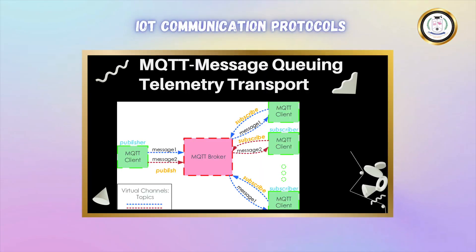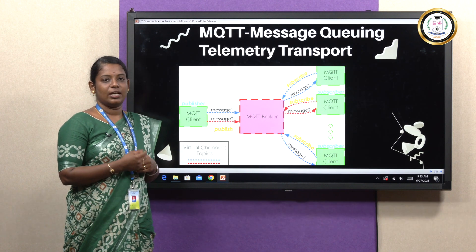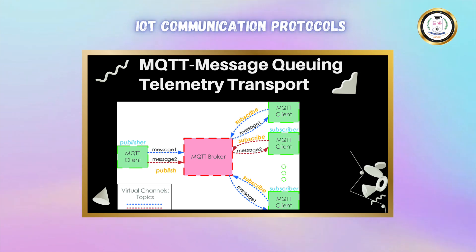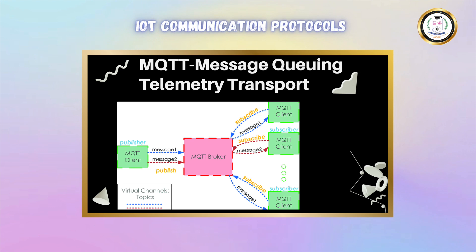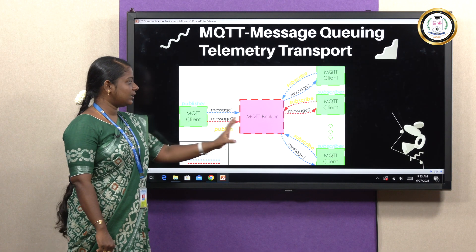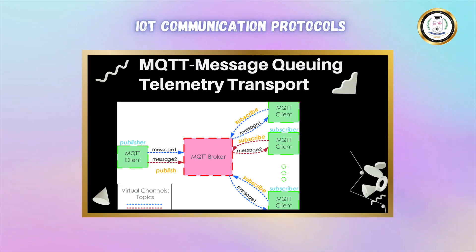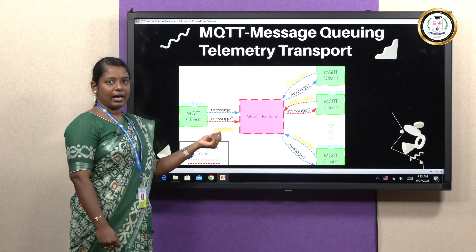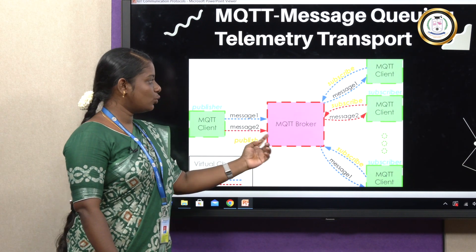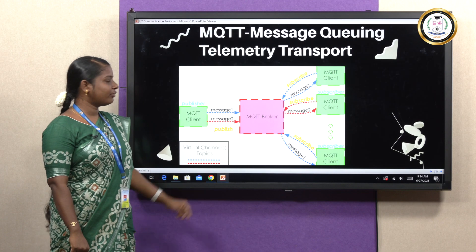Next is MQTT protocol, which is Message Queuing Telemetry Transport. HTTP and COAP are request-response models, which means if we request information or a message, we wait for the response. But MQTT is a publish-subscriber model. In this model, if an MQTT client wants to send a message, no direct transmission happens. In between the client and the server, there is an MQTT broker. The client passes its message through the broker, which segregates the messages into topics and checks for their originality. Then, using IDs or codes, message one is sent to client one and message two to client two. This transmission happens only if the client is subscribed to the broker. This is the working of MQTT protocol.